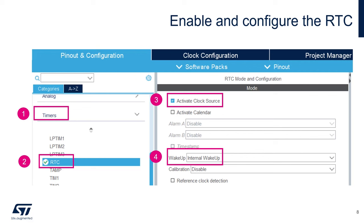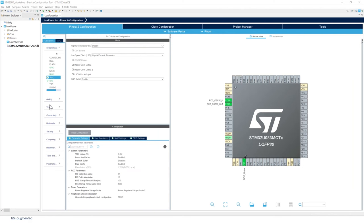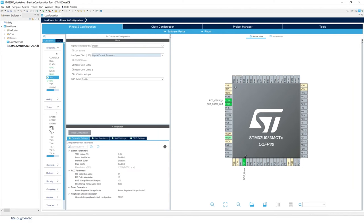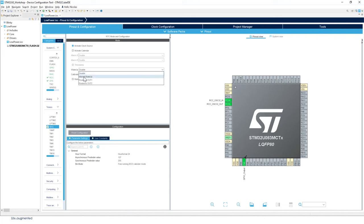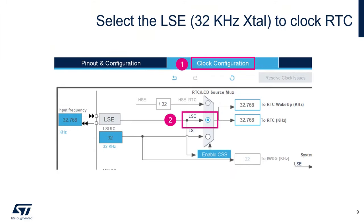The next step is to enable and configure the RTC. Under Timers, select RTC, activate the clock source, and also select Wake Up with internal wake up. Then move to the Clock Configuration tab, where we'll select the clock source for the RTC. By default it uses LSI — we just need to select LSE instead, and that will clock the RTC.